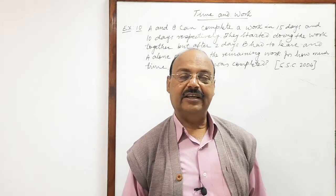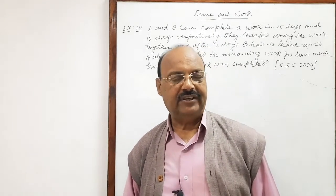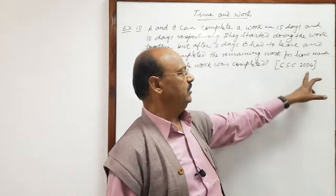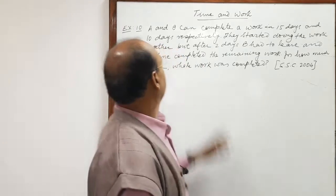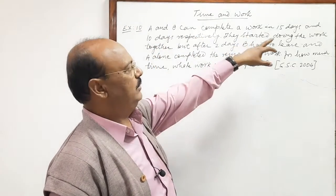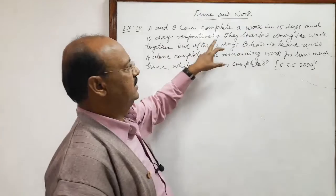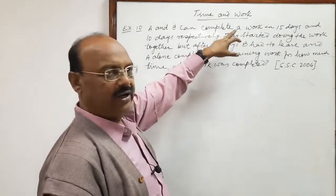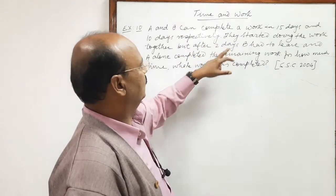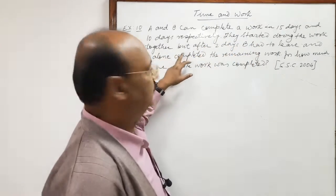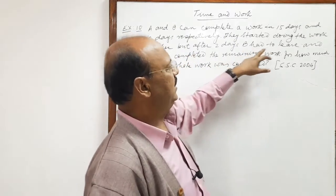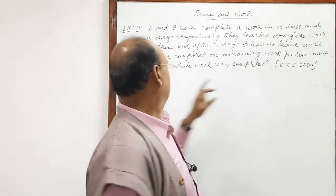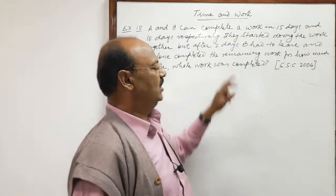Welcome students. Let us see a very interesting and important question from the topic Time and Work. This question has been asked in the Staff Selection Commission examination in 2004. The question is: A and B can complete a work in 15 days and 10 days respectively. They started doing the work together, but after two days B had to leave and A alone completed the remaining work. In how much time was the whole work completed?